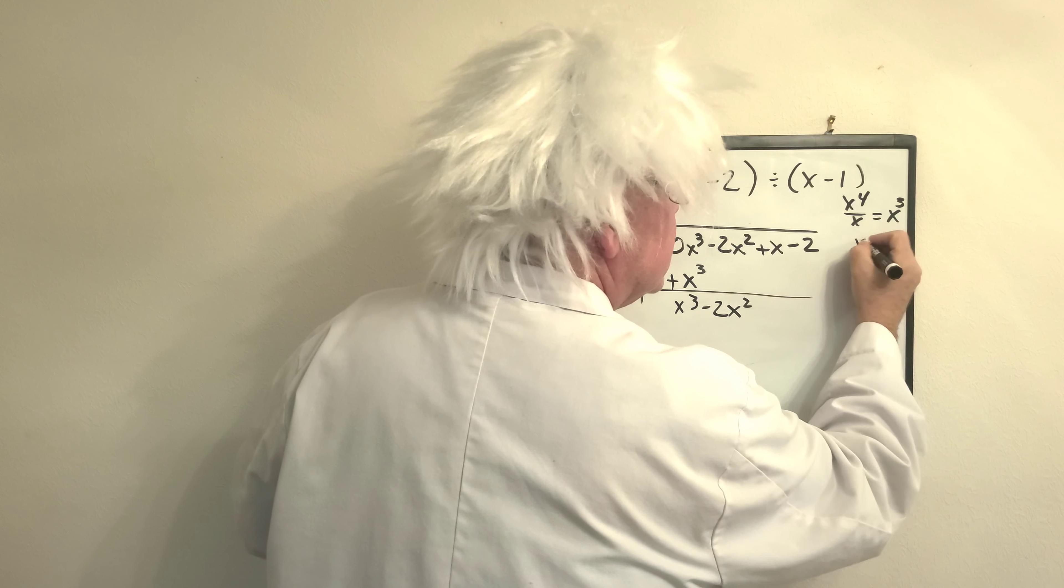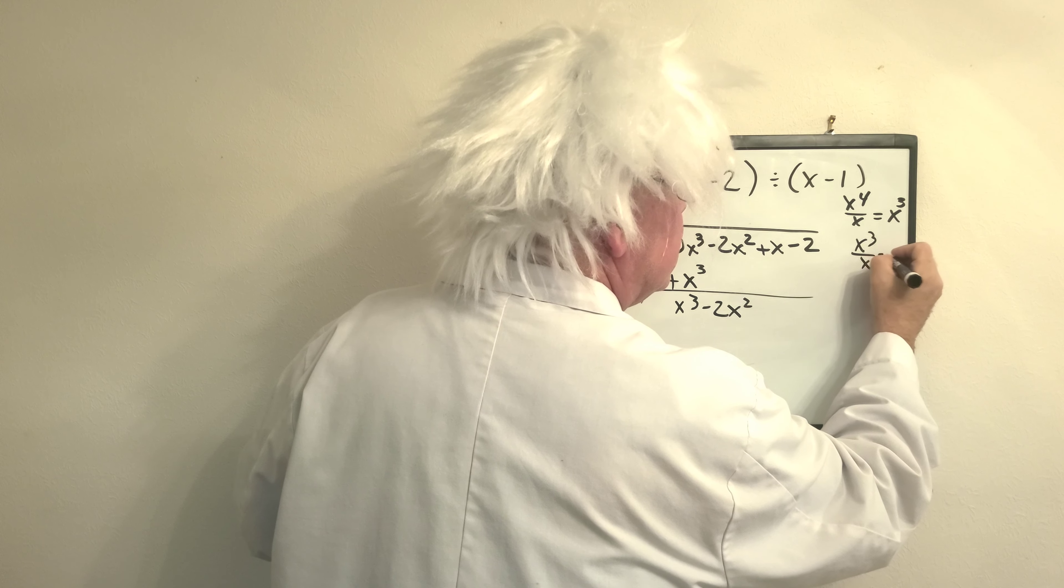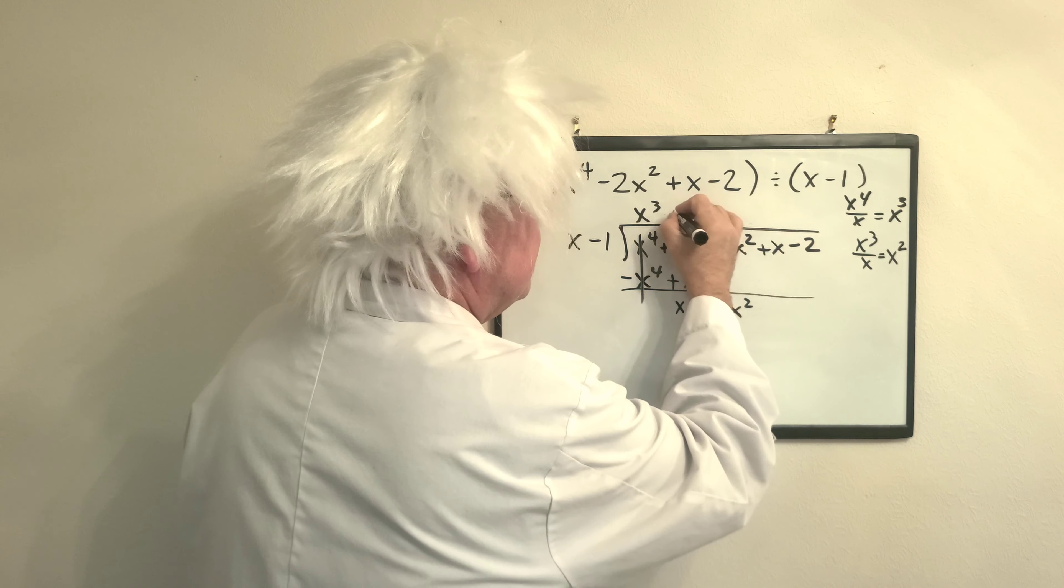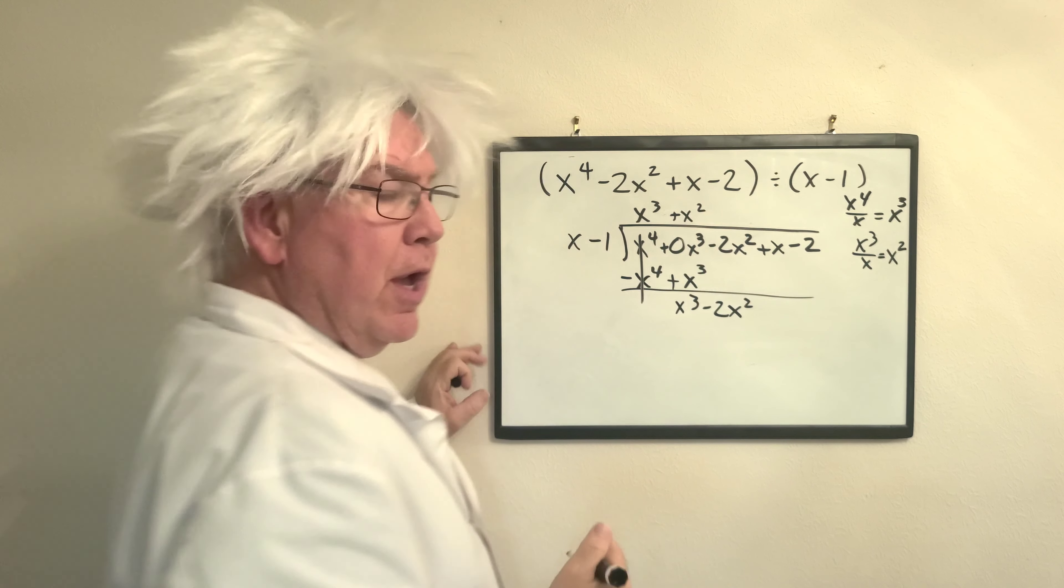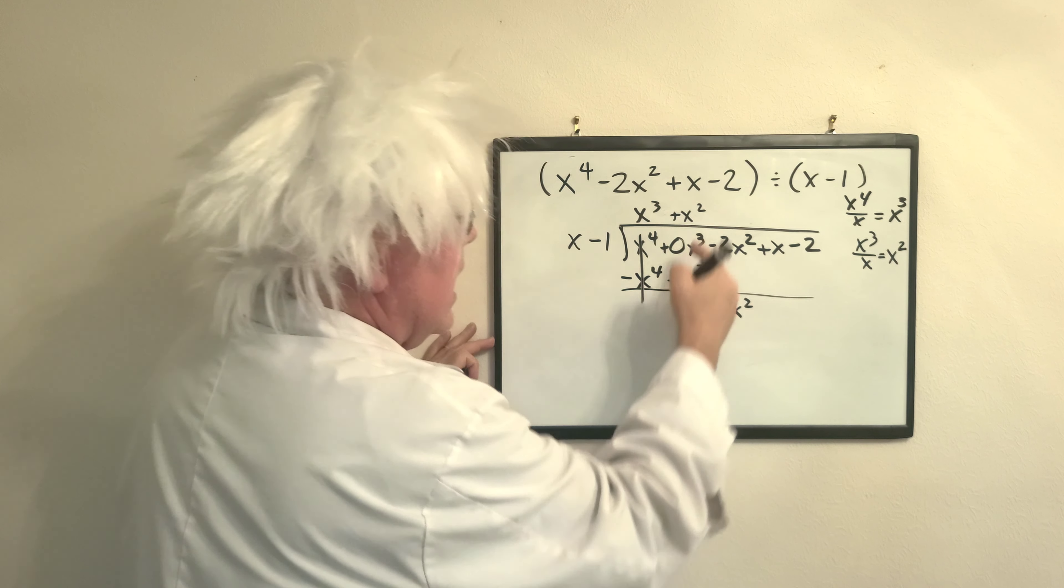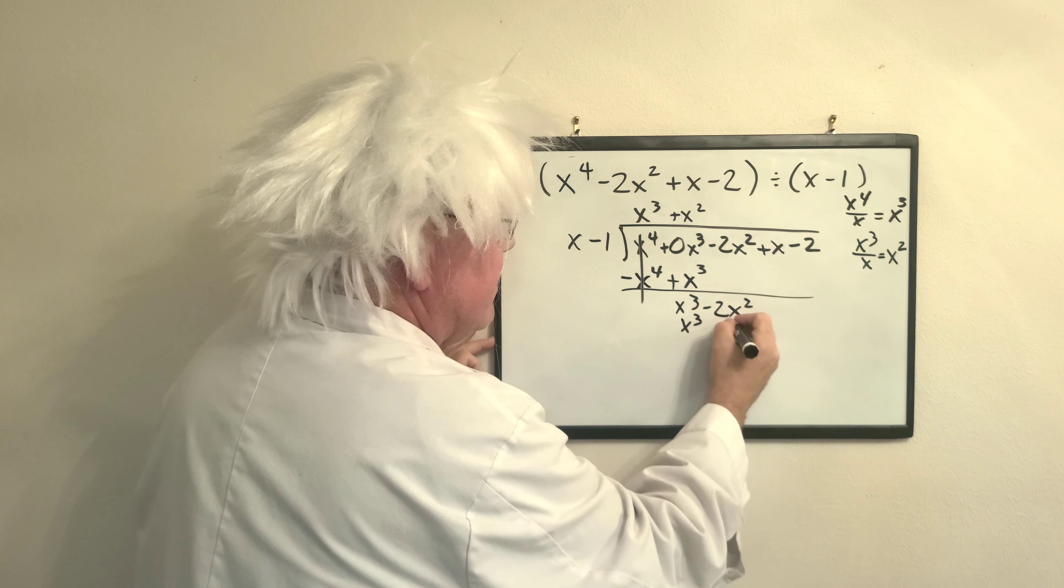How many times does x go into x cubed? That would be x squared. So we put positive x squared up here and we say, okay, x squared times x is x cubed and x squared times negative x is negative x squared.